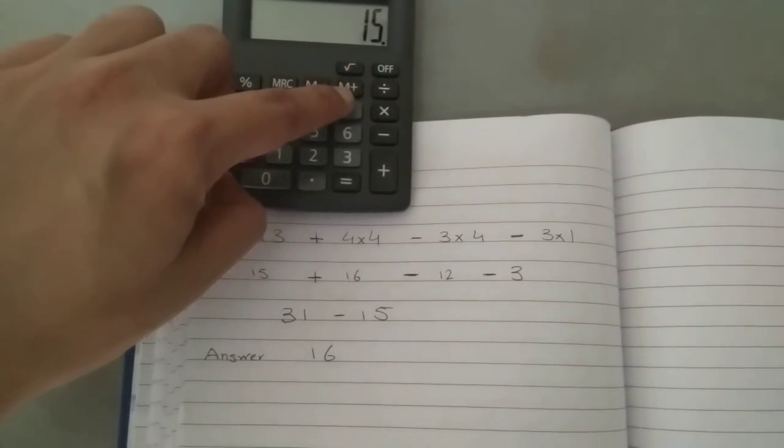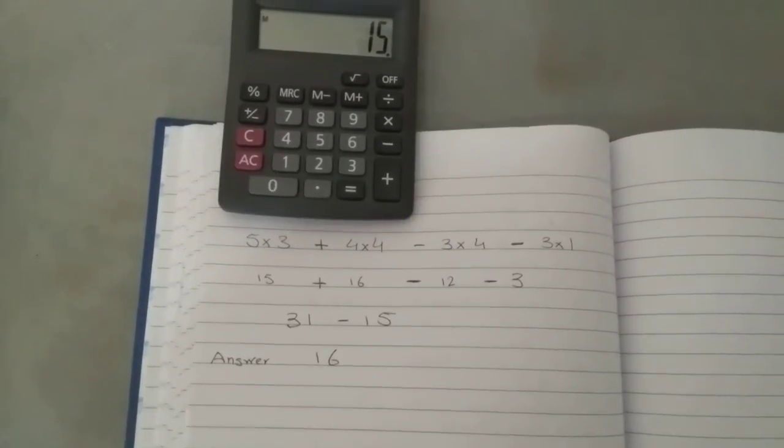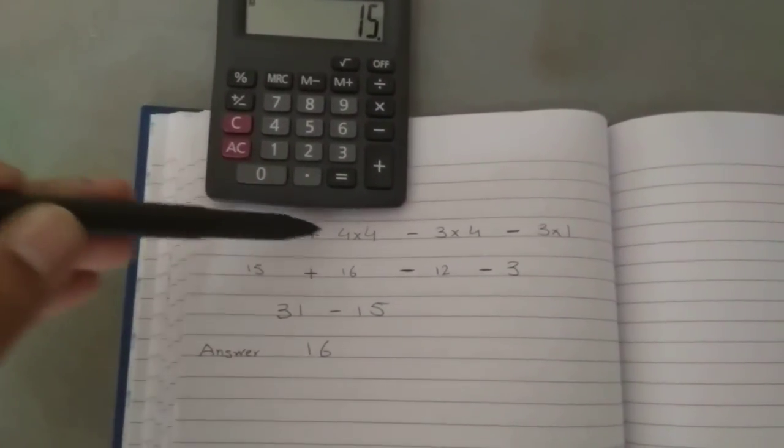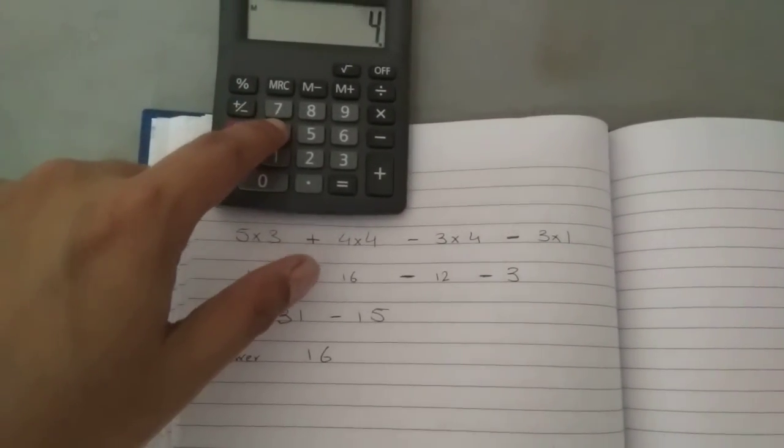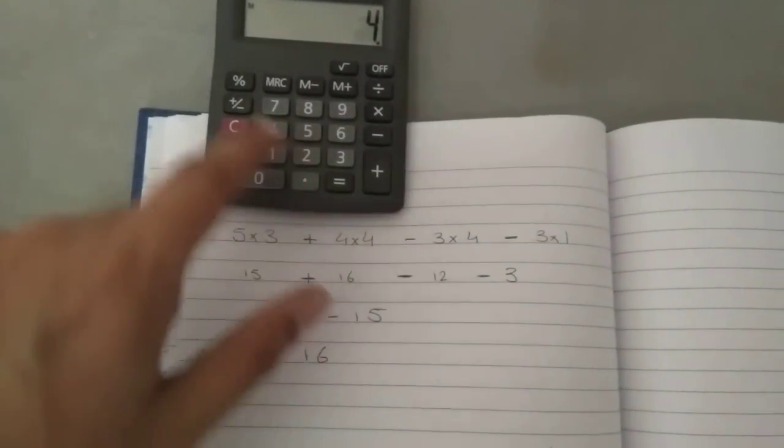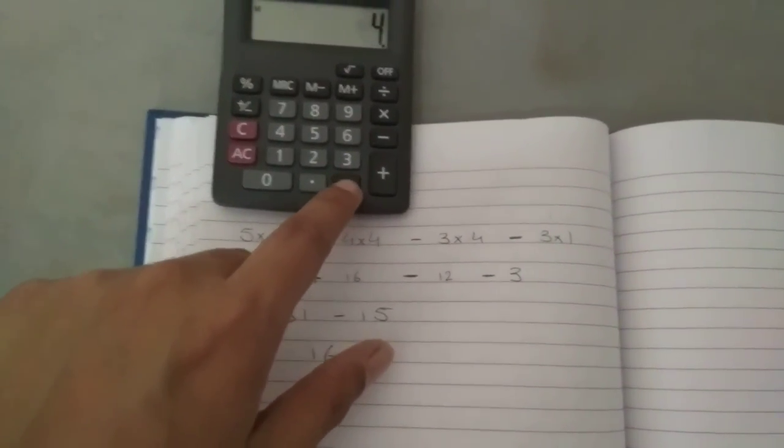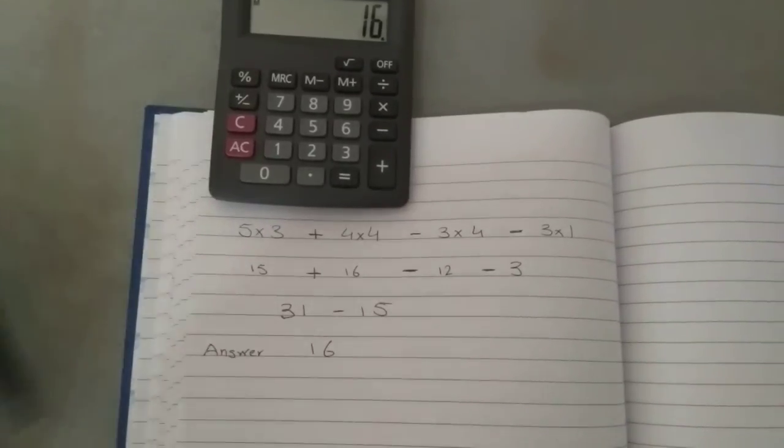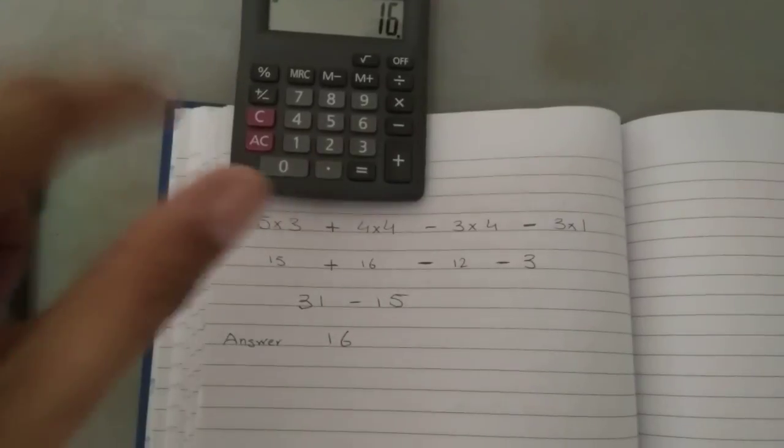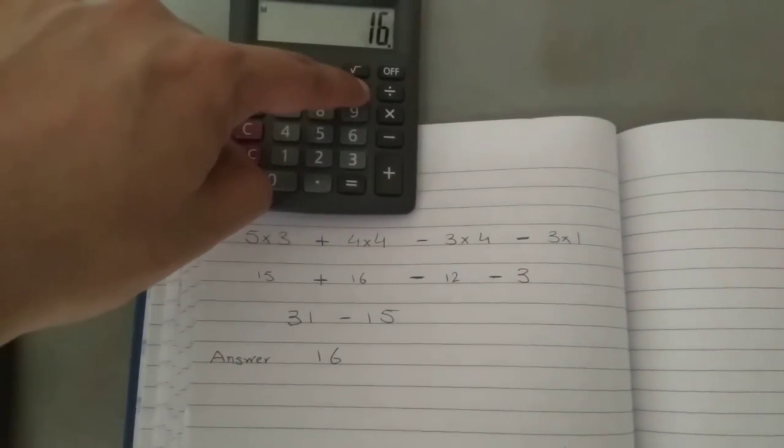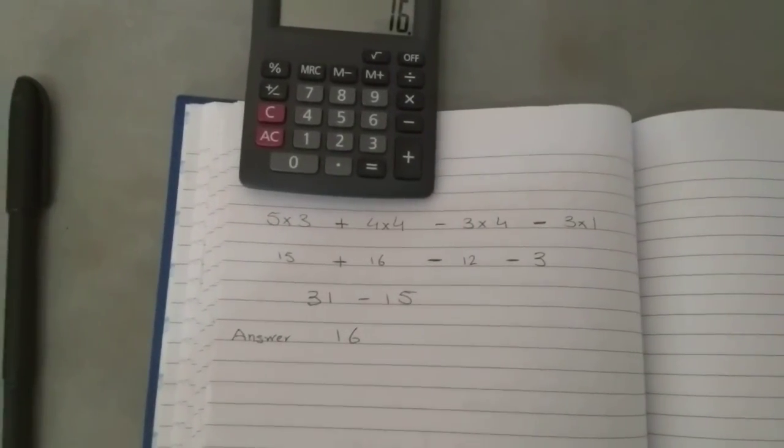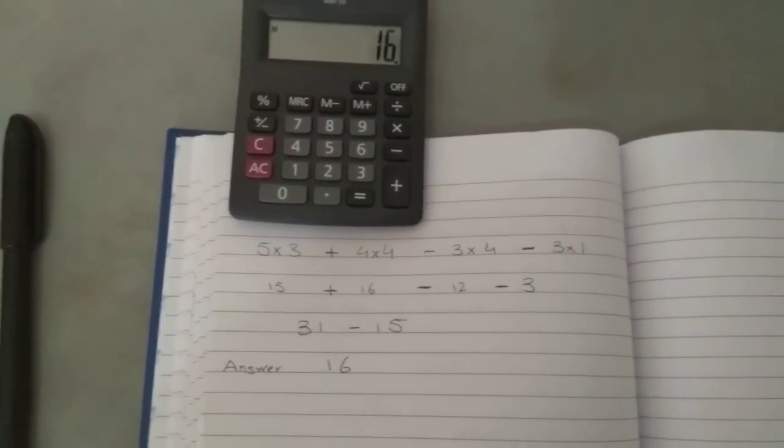Now I move to the next calculation. I will do 4 × 4 equals 16. As you see here, it's 16. So what I'm going to do is save it again in the calculator. As you see, I saved two amounts in the calculator.